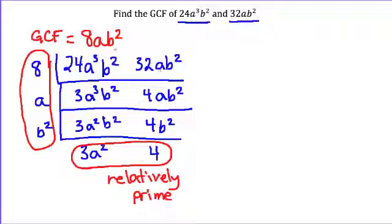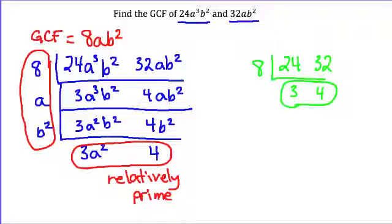So this is one technique of doing this. The second technique is similar, except instead what we do is we focus on just the numbers first, 24 and 32. So once again, I'll just pull up that 8 really quickly since I know that already works: 3 and 4. So I know that my GCF is equal to 8.